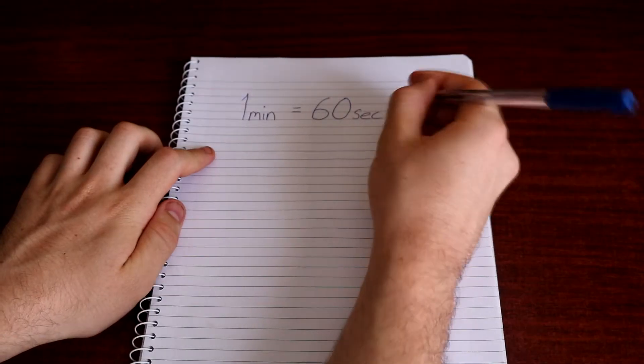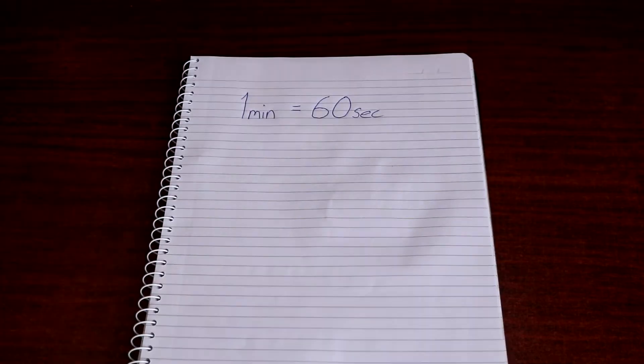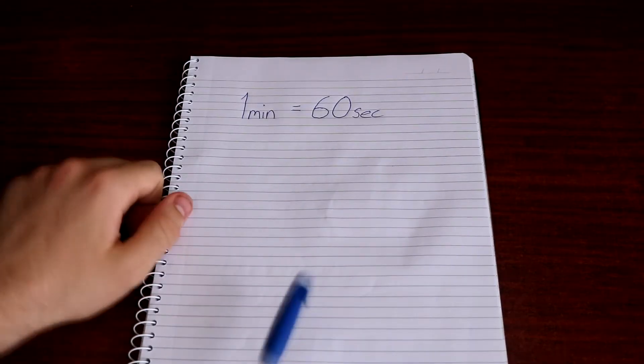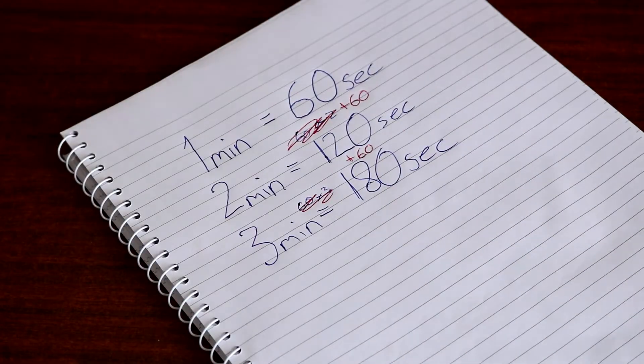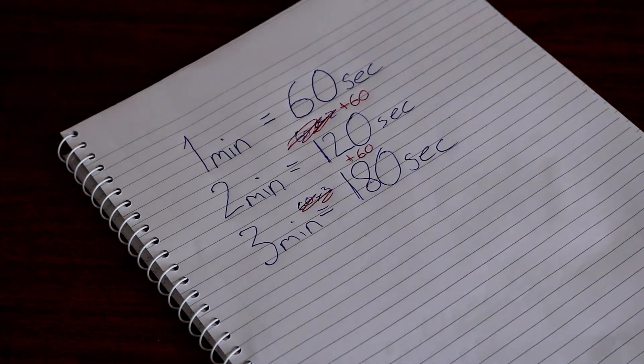The first thing you need to know is that there are 60 seconds in one minute. No matter where you are on planet earth, 60 seconds will always equal one minute. After 60 seconds have passed, that has been one minute.